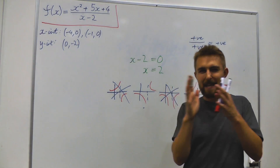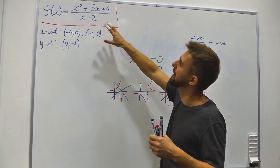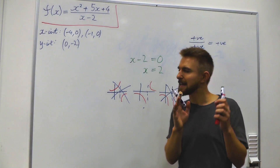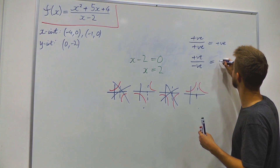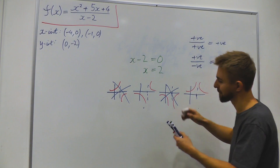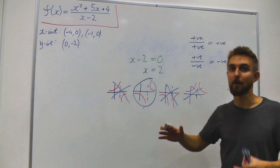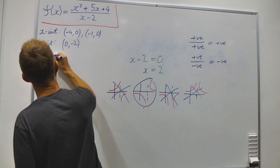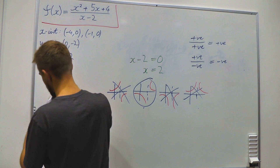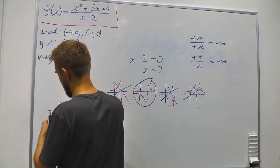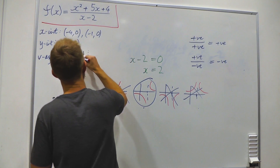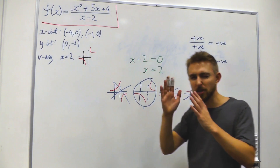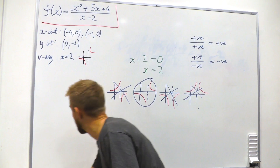Just below x = 2: the top line is still positive, but the bottom line (2− minus 2) is a small negative number. Positive divided by negative is negative. So to the left of x = 2 the function goes to −∞, and to the right it goes to +∞. We put this in our treasure chest: vertical asymptote at x = 2 with that specific orientation.